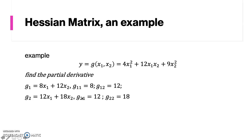Then for the second partial derivatives: taking it with respect to x1 gives 12, and with respect to x2 gives 18, since the equation is a function of x1 and x2. So let's arrange the results of these second partial derivatives as a Hessian matrix.